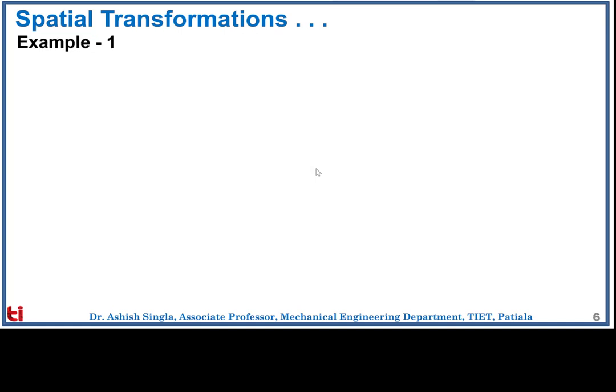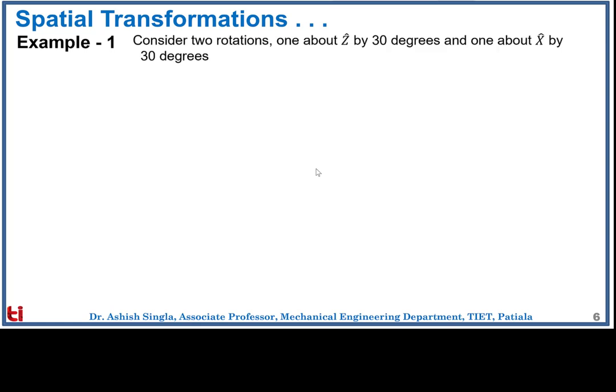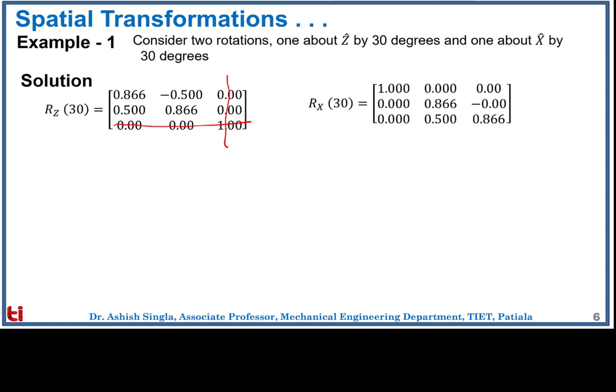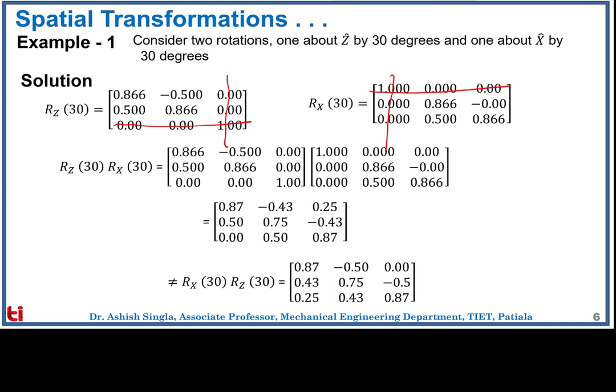Rotation matrices do not commute. To prove this, consider two rotation matrices: one about the Z axis by 30 degrees and one about the X axis by 30 degrees. For R_Z(30), the Z column and row entries are 0, 0, 1. For R_X(30), the first row and column entries are 1, 0, 0, and the remaining entries are cos θ, −sin θ, sin θ, cos θ. If we multiply these two and then swap the order, the results do not match, confirming that rotations in general do not commute.